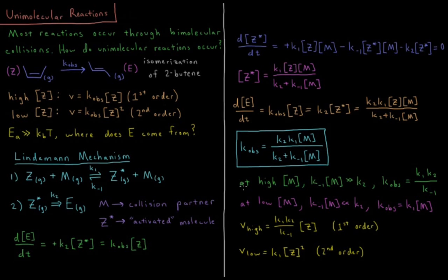Let's look at some limiting cases. At high concentration of M, the reaction should be first order. If [M] is large, then k₋₁[M] is much greater than k₂, so k₂ plus k₋₁[M] is essentially k₋₁[M]. That means k_obs equals k₂k₁[M] over k₋₁[M], and the [M] terms cancel, giving us k_obs equals k₁k₂ over k₋₁.